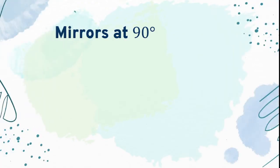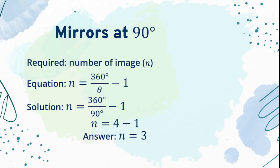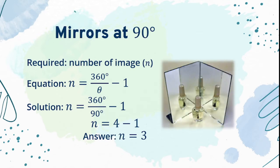If the two mirrors at a right angle are 90 degrees, we are looking for the number of images formed between these two. Using the equation N equals 360 degrees divided by angle theta minus 1, substituting the value of 90 to the angle theta, therefore we will have N equals 360 degrees divided by 90 degrees minus 1. Dividing 360 by 90 resulting to 4 minus 1, the number of images formed between mirrors at 90 degrees is 3.